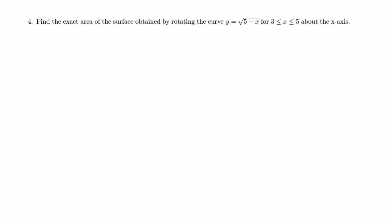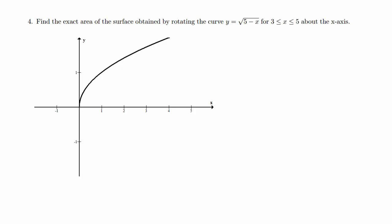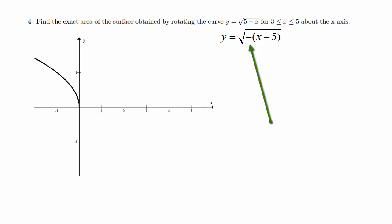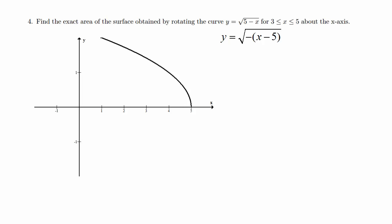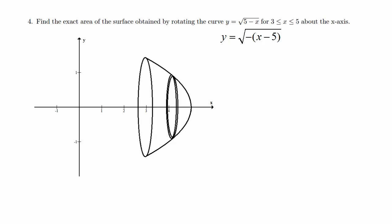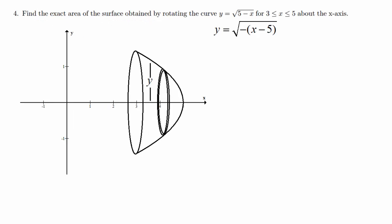The easiest way of approaching this problem is to actually try to graph the solid. I'm going to go ahead and graph y equals root of 5 minus x. Starting from the graph of root x, I rewrite it to apply transformations: the negative x means reflect over the y-axis, and the minus 5 means shift right 5 units. Then I restrict the domain from 3 to 5 and perform the rotation about the x-axis, drawing a typical washer to identify the radius.